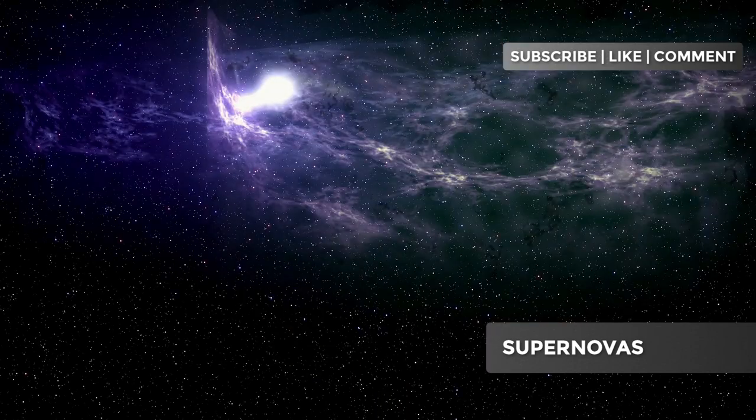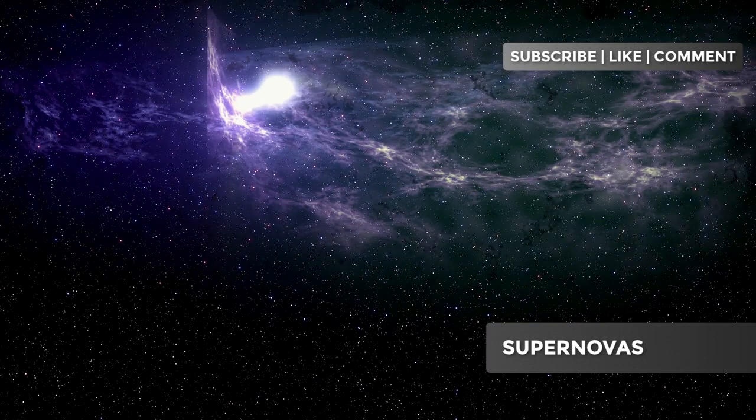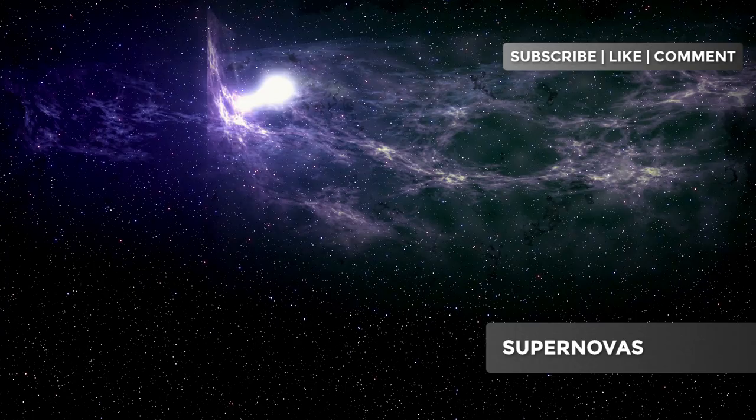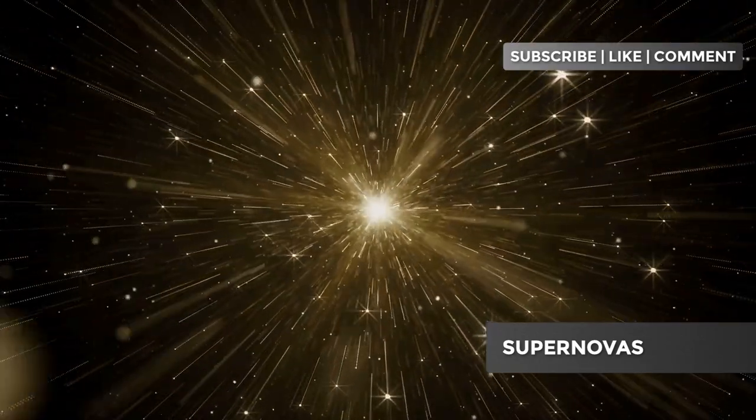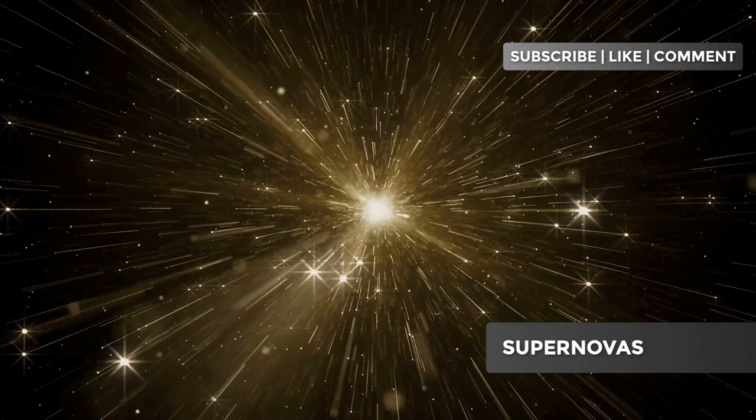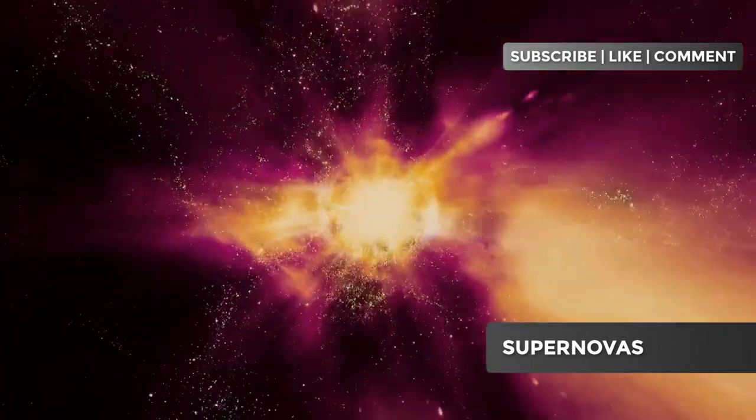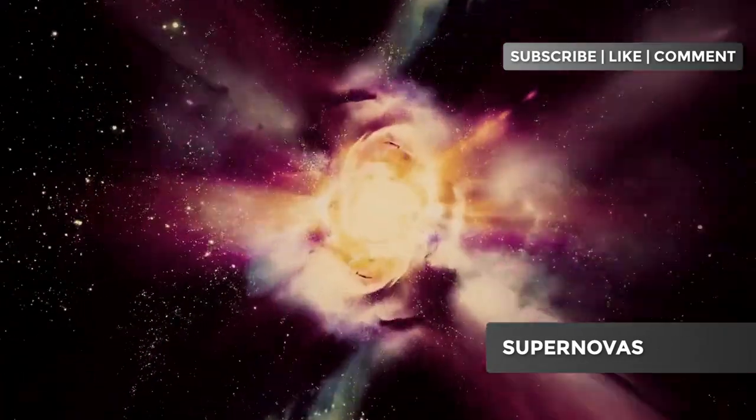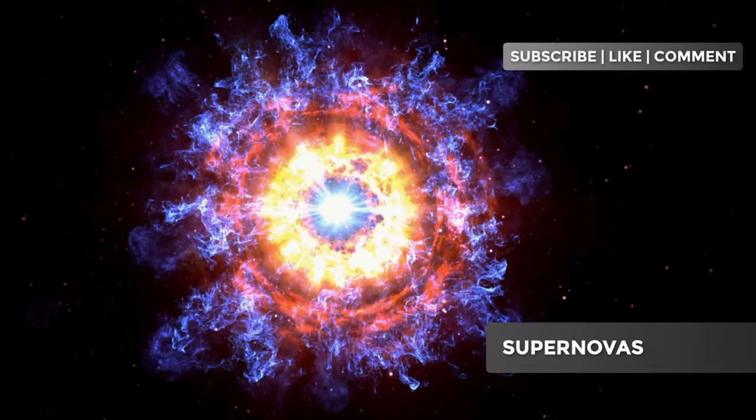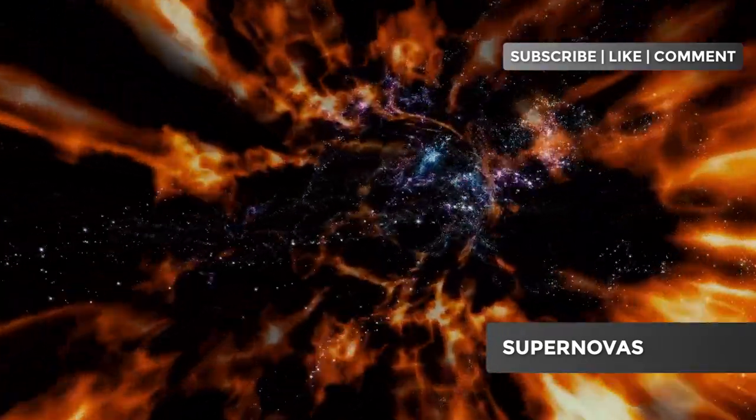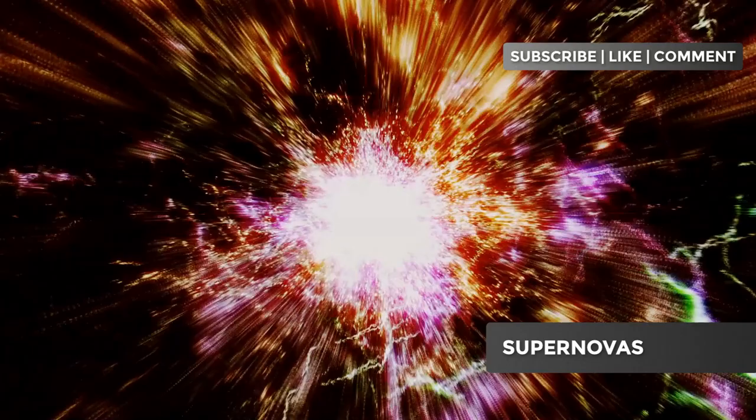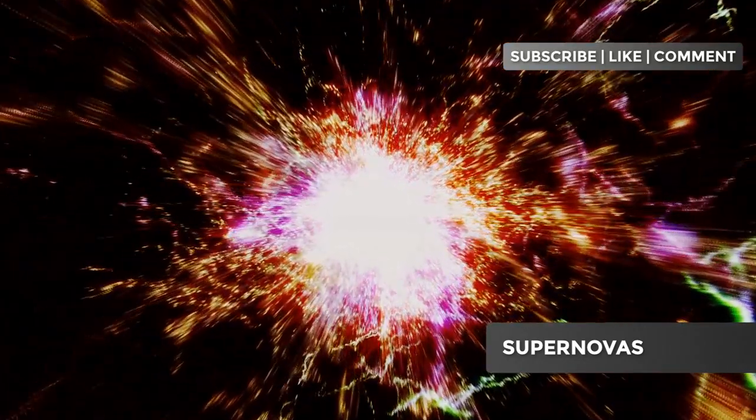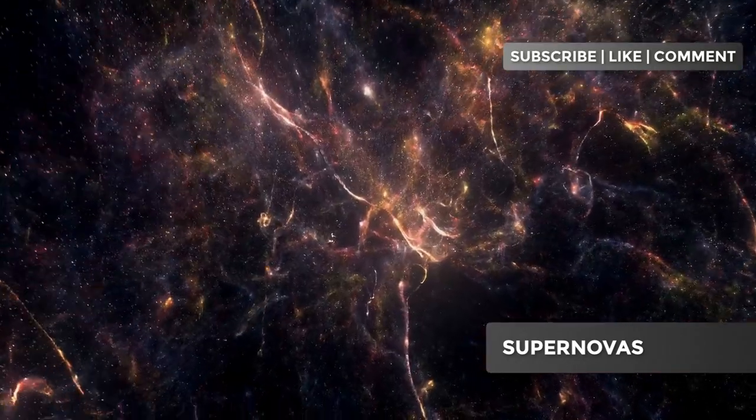Pair instability supernovas are rare phenomena that occur in extremely massive stars, with at least 100 times the mass of our sun. In these stars, the production of pairs of particles and antiparticles in the core can cause a loss of pressure, leading to a partial collapse followed by a gigantic explosion. These explosions are so powerful that they can completely destroy the star, leaving no remnant behind. These supernovas are rare but extremely bright and can be observed at great distances in the universe.